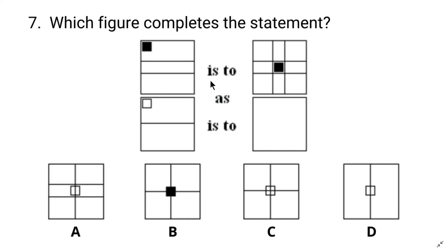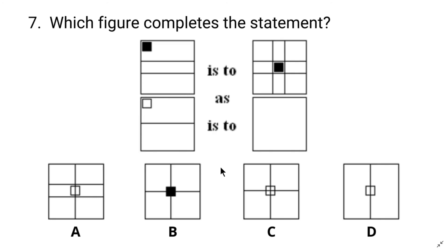Okay, here the black square has been moved to the center and these two horizontal lines remain as they are, but we can see two additional vertical lines. Similarly, here we have a white square that should be moved to the center, and the single horizontal line should remain as it is. Since there is a single horizontal line, one additional vertical line should appear. So the answer is C.